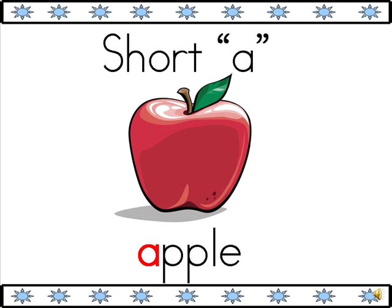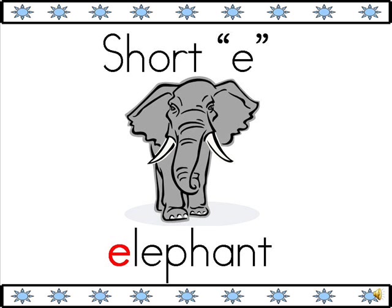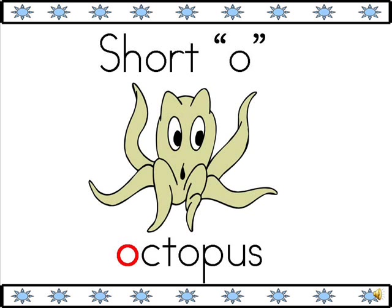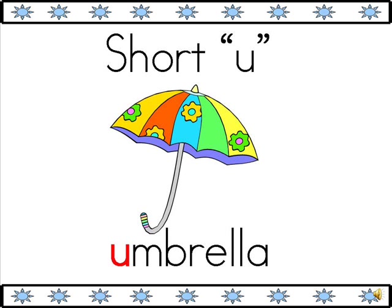The short A says A as in apple. The short E makes the E sound as in elephant. The short I makes the I sound as in igloo. The short O makes the AH sound as in octopus. The short U makes the UH sound as in umbrella.